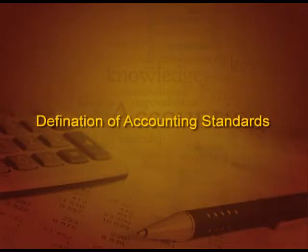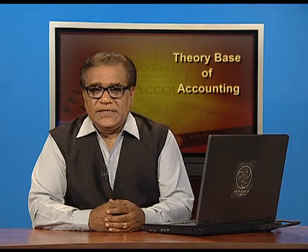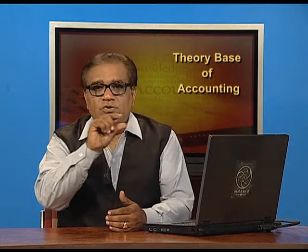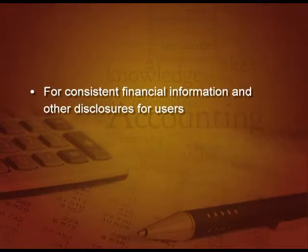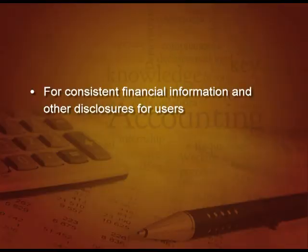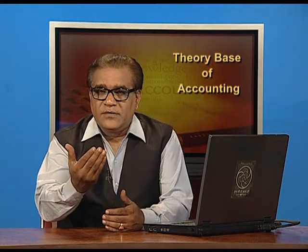Accounting standards are the written statements of uniform accounting rules and guidelines — those rules and guidelines which are uniformly applicable for everybody. These are called standards to be achieved and to be followed. These standards are made for consistent financial information and other disclosures required for the users. One important thing to note: these standards cannot override the statute, that is the law. If law is there, it is supreme.